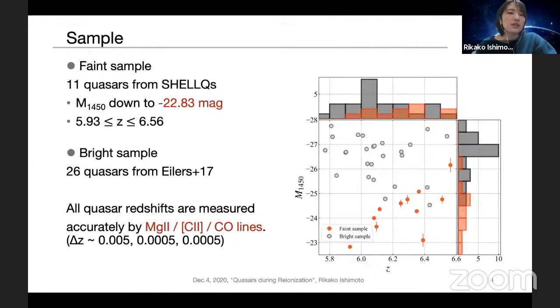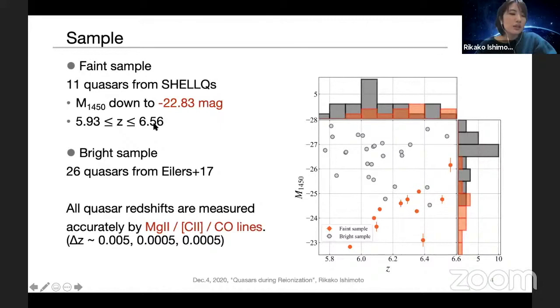Our sample for the measurement of the proximity zone consists of 11 quasars from SHELLQs and 26 quasars which are used in Eilers et al. 2017. Hereafter, I call these 11 SHELLQs quasars faint sample and the other 26 quasars bright sample. In this figure, I show the distribution of the absolute magnitude and redshift. The orange dots and gray dots represent the faint and the bright sample. As you can see, the absolute magnitude of the faint sample are down to minus 22.83, significantly fainter than those of earlier studies.